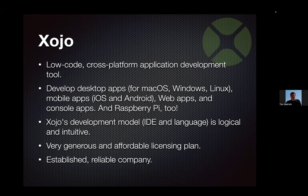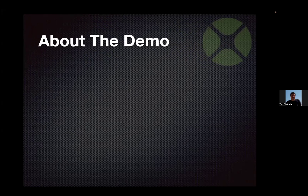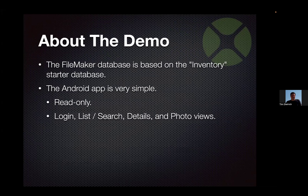So that's my little spiel about Zojo — I have a lot of love for the technology and the company. Try it. A little bit about the demo: the FileMaker database is just the basic inventory starter database with really only one modification. The Android app is very simple — it's read only. I'm not showing how to update, add, or delete records. Really simple flow: you log in, there's a list view, you can search, click to get details, see photos. That doesn't mean you can't build more sophisticated apps with Zojo — I just don't have time in this webinar to walk through all that.